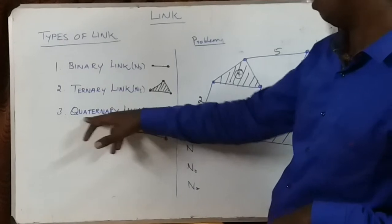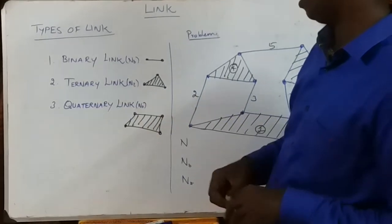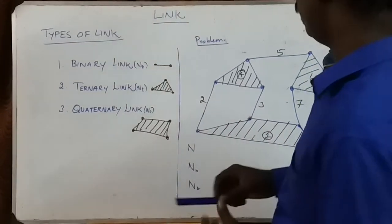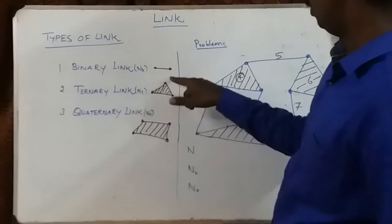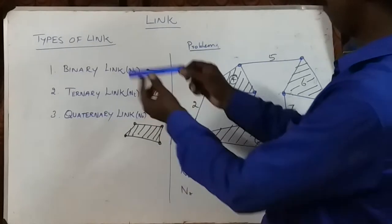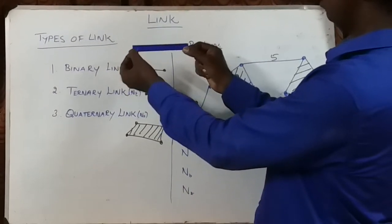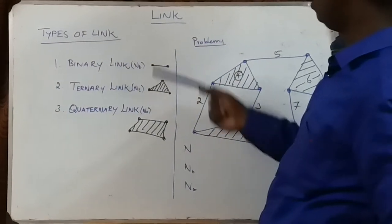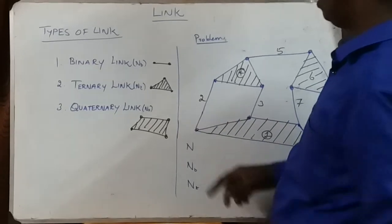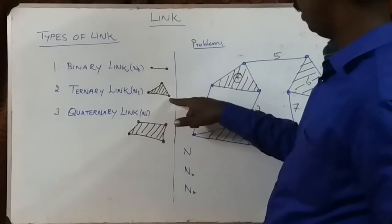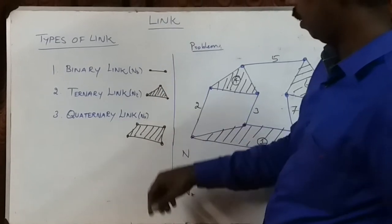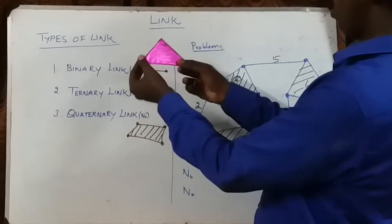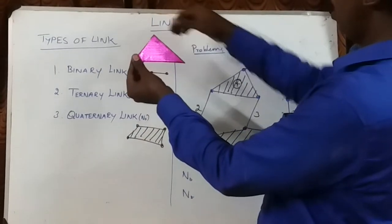A binary link means a link having two ends. This is the sample for a binary link - a link having two ends, 1 and 2, is a binary link. Next, a ternary link means a link having three ends. Here is the sample for that - a ternary link with ends one, two, and three.